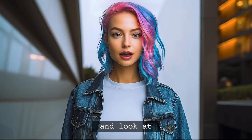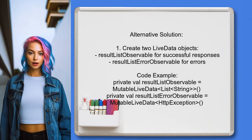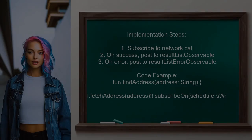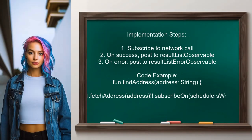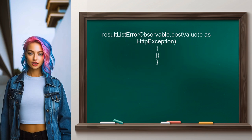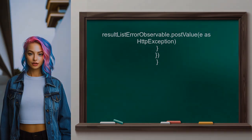Another answer suggests handling error states in live data by creating two separate live data objects — one for successful network responses and the other for errors. They demonstrate this with a movie search app using mutable live data for both the result list and error handling. In their implementation, when fetching data, they subscribe to the network call. On success, they post the results to the result list observable; on error, they post the error to the result list error observable.